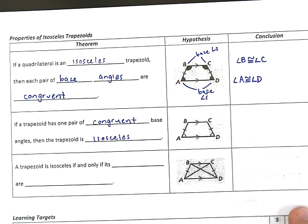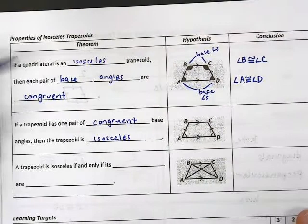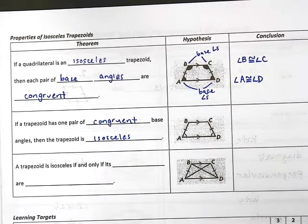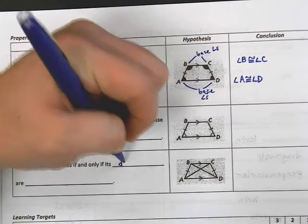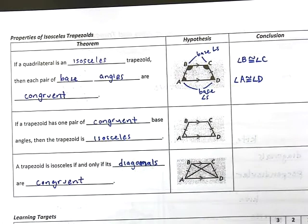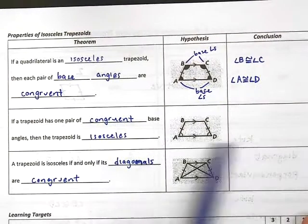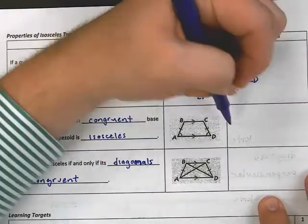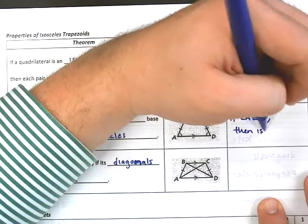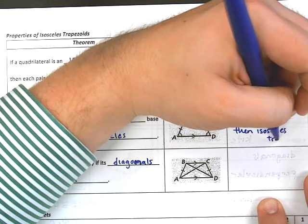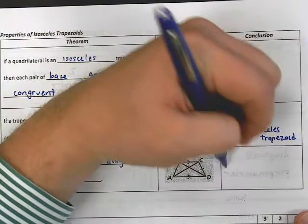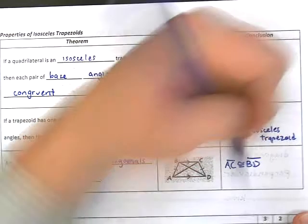And then lastly, a trapezoid is isosceles if and only if its diagonals are congruent. Okay. So, just to finish up some of these pictures and conclusions, here I would say, if angle A is congruent to angle D, then isosceles trapezoid. And then in my next picture, I would say AC is congruent to BD.